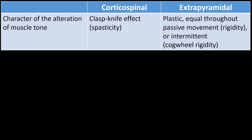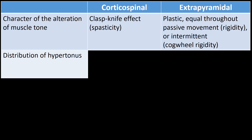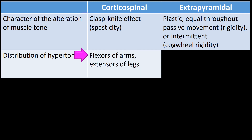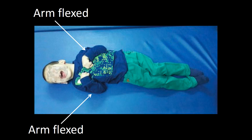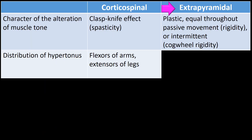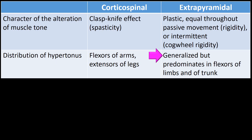The next clinical feature that helps distinguish these conditions is the distribution of hypertonicity. In patients with corticospinal pathology, hypertonicity prevails in the flexor muscles of the arm and extensors of the leg. In patients with extrapyramidal pathology, hypertonicity is generalized, but flexion predominates.